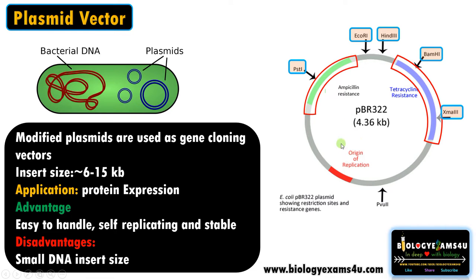It is a modified plasmid used as a gene cloning vector with an insert size of approximately 6 to 15 kb. It helps in protein expression inside the host. The advantage of plasmid is that it is easy to handle, it is stable, and it can easily replicate inside the host. The major disadvantage is it can carry only small fragments, to a maximum of 15 kb.